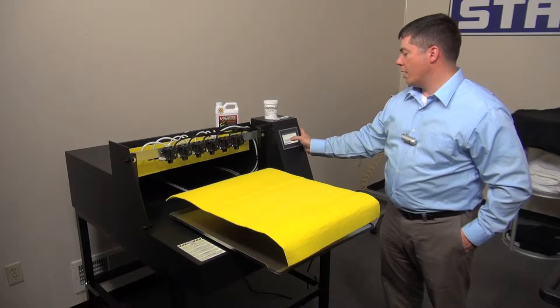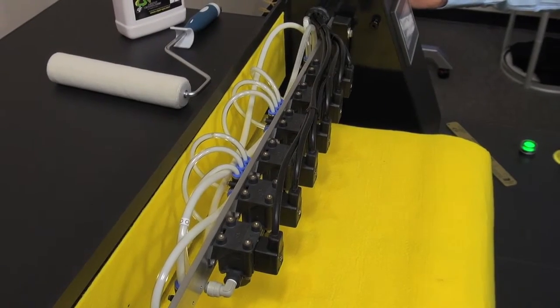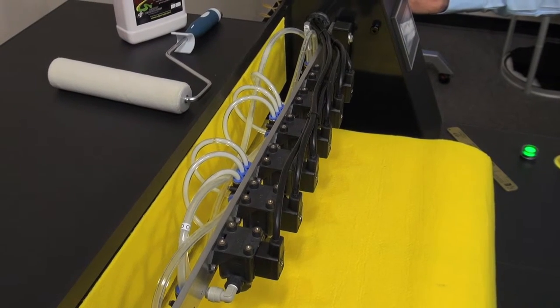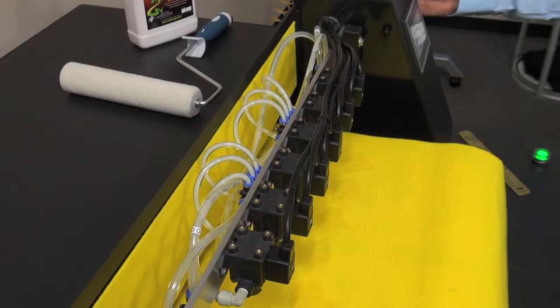Press the start button and allow it to run. The machine will purge any of the pre-treatment fluid in the lines back to the pre-treatment fluid container.